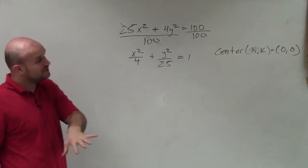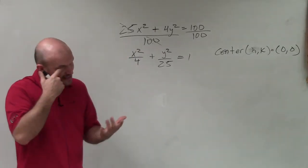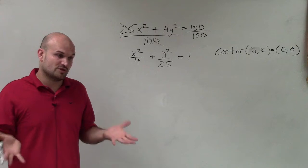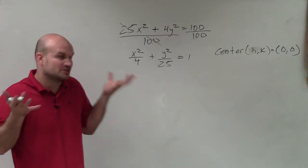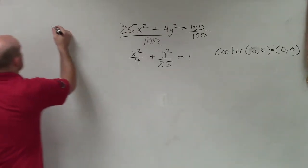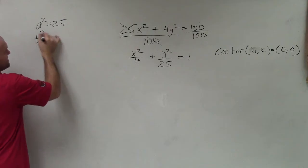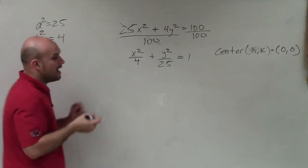The next thing is now I need to determine what my a squared is and my b squared. And when I'm looking at ellipses, it's very obvious to be able to choose which one you want. a squared is always going to be your larger denominator. So I look at 25 and 4, and I could say obviously a squared is going to equal 25.